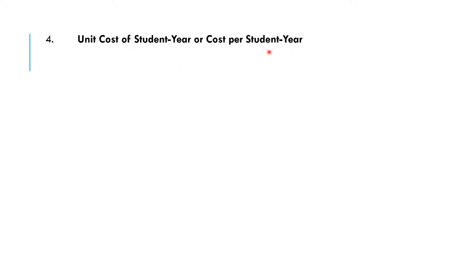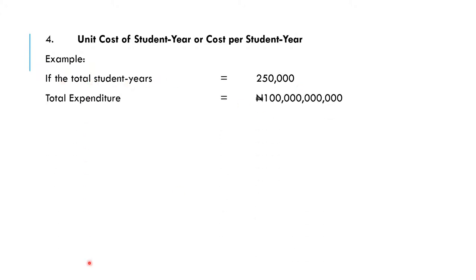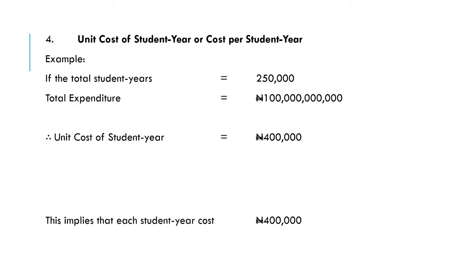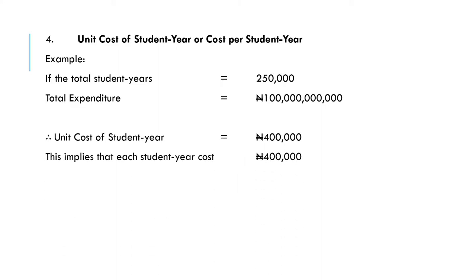Now let's look at the unit cost per student year. If the total student years is 250,000 and the total money expended was 100 million naira, the unit cost of the student year would be 100 million divided by 250,000, which gives 400 naira. This implies 400 naira was spent per student year.